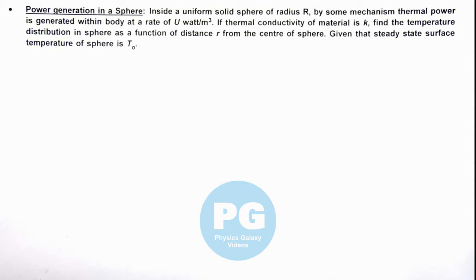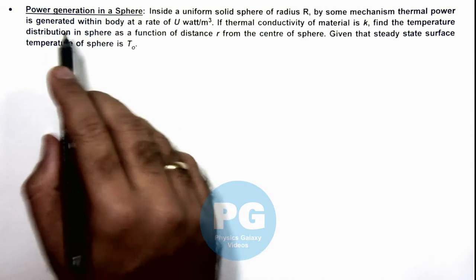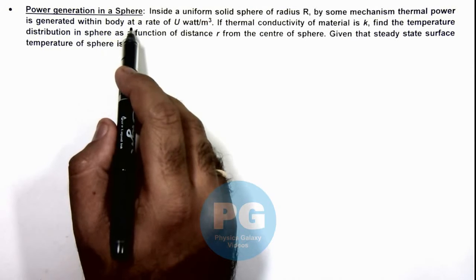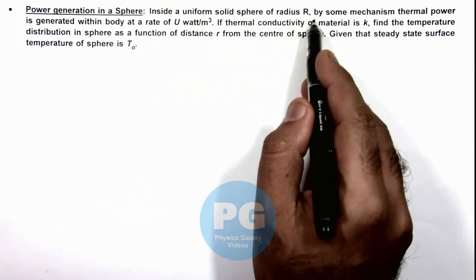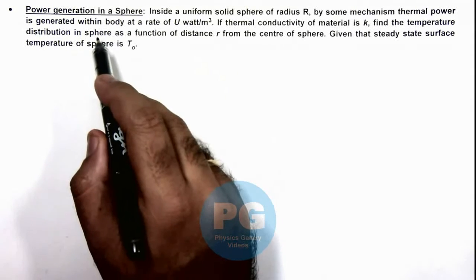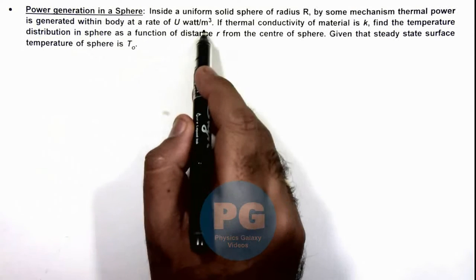In this illustration we'll be analyzing power generation in a sphere. We are given that inside a uniform solid sphere of radius R, by some mechanism thermal power is generated within the body at a rate of U watts per meter cubed.